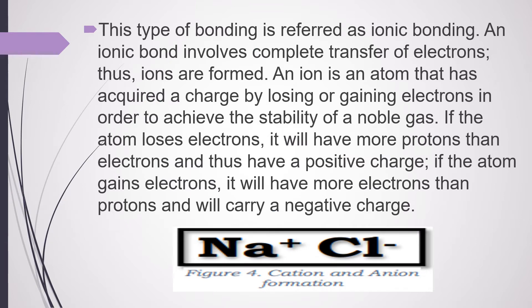This type of bonding is referred to as Ionic Bonding. An ionic bond involves the complete transfer of electrons. Thus, ions are formed. An ion is an atom that has acquired a charge by losing or gaining electrons in order to achieve the stability of a noble gas.